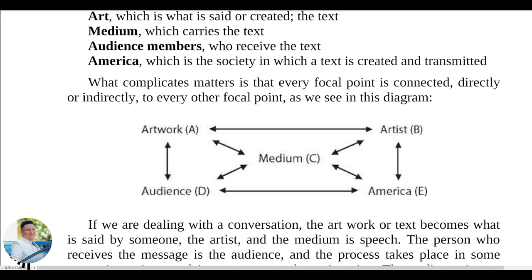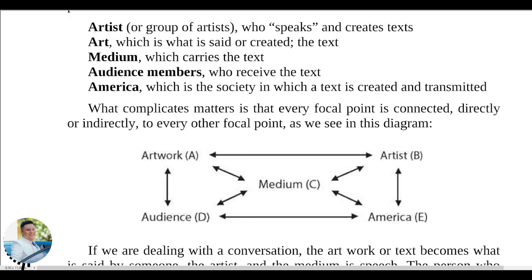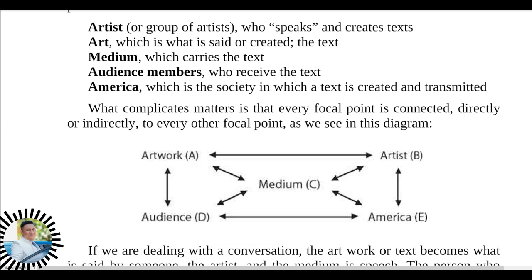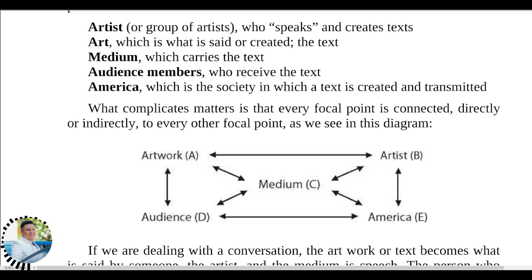What makes the Focal Point Model interesting is that any of the five elements can communicate directly with each other. For example, the artwork to the artist, the artist through the medium to another artist, artwork to the audience, and the audience to the society. When an audience member watches something and shares it within their community, they are contributing to society — for instance, someone who watches a video about recycling and then shares that idea with others who haven't seen it.